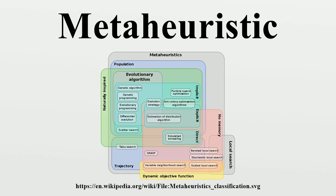Meta-heuristics are used for combinatorial optimization in which an optimal solution is sought over a discrete search space. An example problem is the traveling-salesman problem, where the search space of candidate solutions grows faster than exponentially as the size of the problem increases, which makes an exhaustive search for the optimal solution infeasible. Additionally, multidimensional combinatorial problems, including most design problems in engineering such as form-finding and behavior-finding, suffer from the curse of dimensionality, which also makes them infeasible for exhaustive search or analytical methods. Popular meta-heuristics for combinatorial problems include simulated annealing by Kirkpatrick et al., genetic algorithms by Holland et al., and scatter search and tabu search by Glover. Literature review on meta-heuristic optimization suggested that it was Fred Glover who coined the word meta-heuristics.